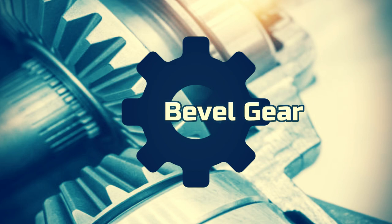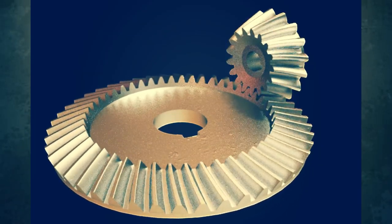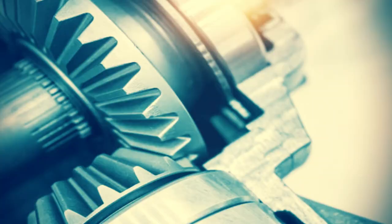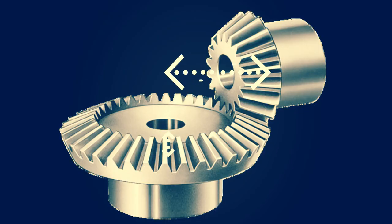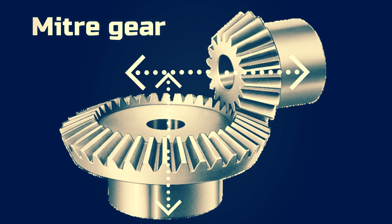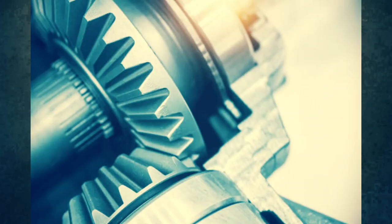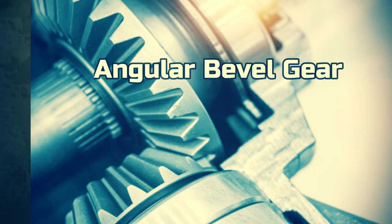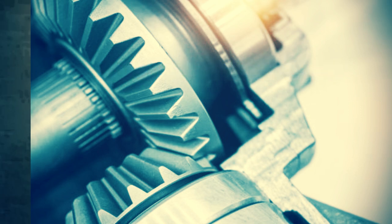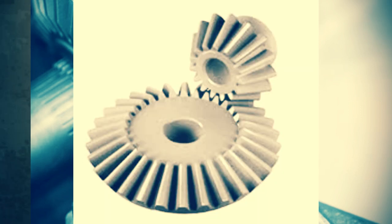The next type is the bevel gear. Bevel gears have blanks that are conical in shape, with teeth that vary in cross-section along the tooth. Two mating gears have their axes intersecting in a plane, usually at right angles. Bevel gears with a shaft angle of 90 degrees are known as mitre gears, while those with other angles are called angular bevel gears.